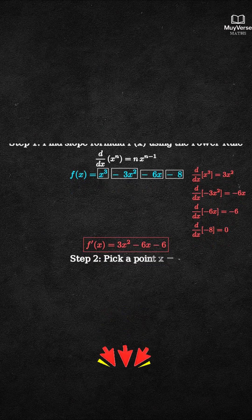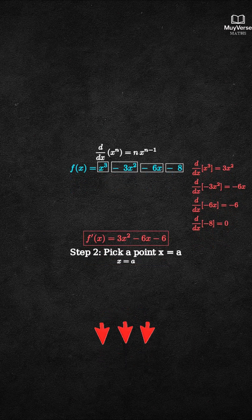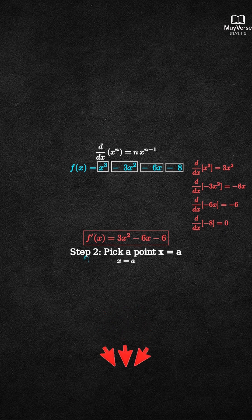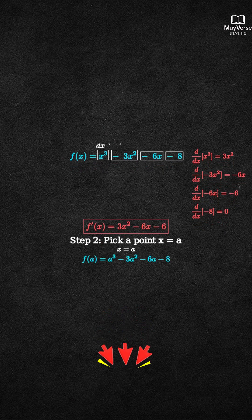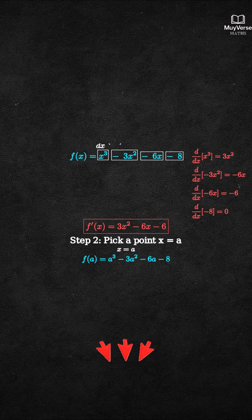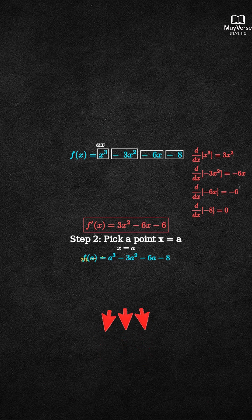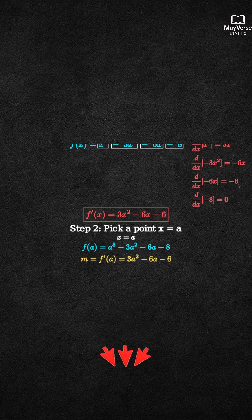Step 2: Pick a point. Let x equal a. The y value is f(a), that is a cubed minus 3a squared minus 6a minus 8. The slope there is m equals f prime of a, that is 3a squared minus 6a minus 6.